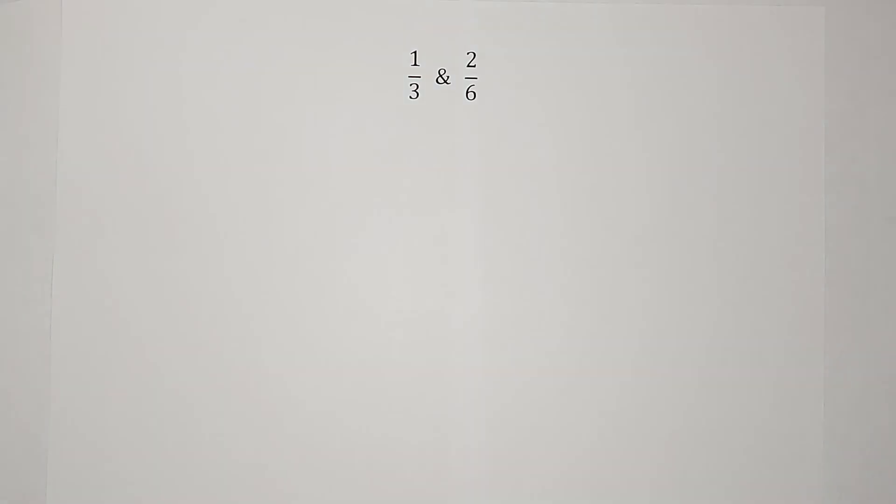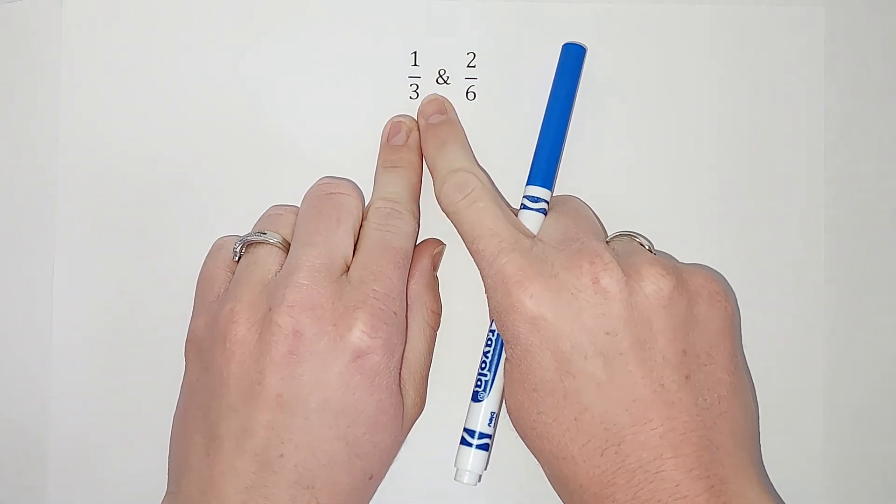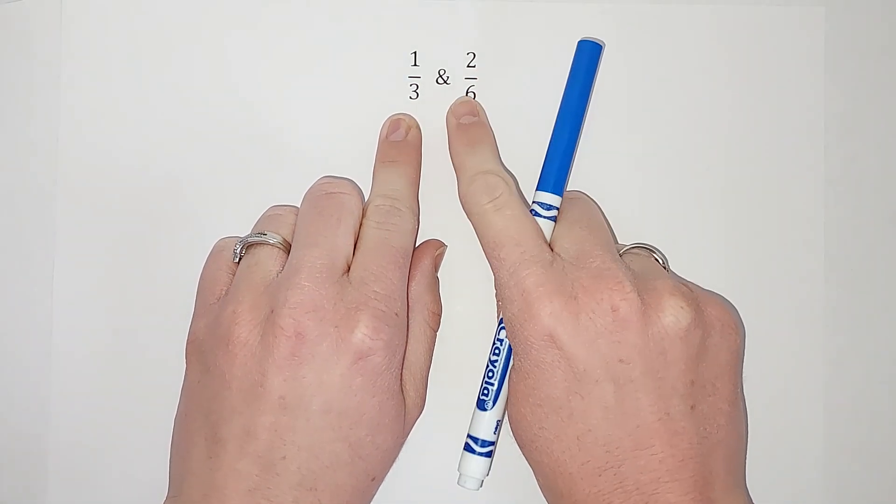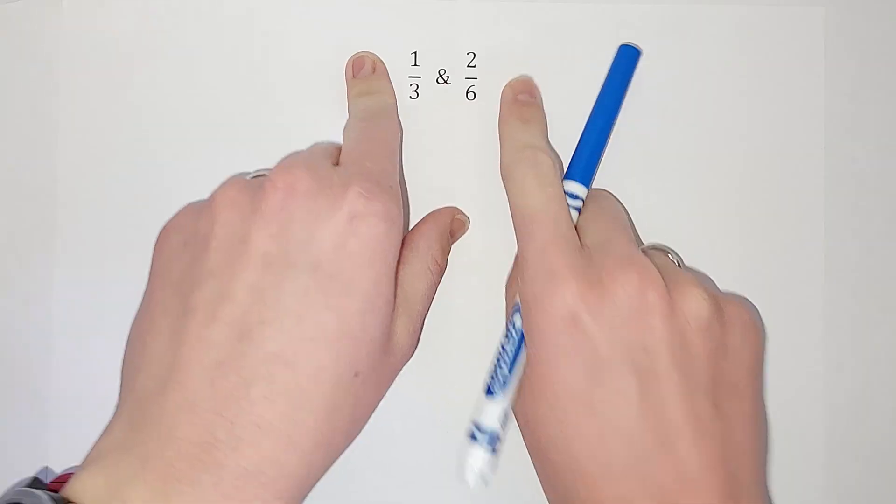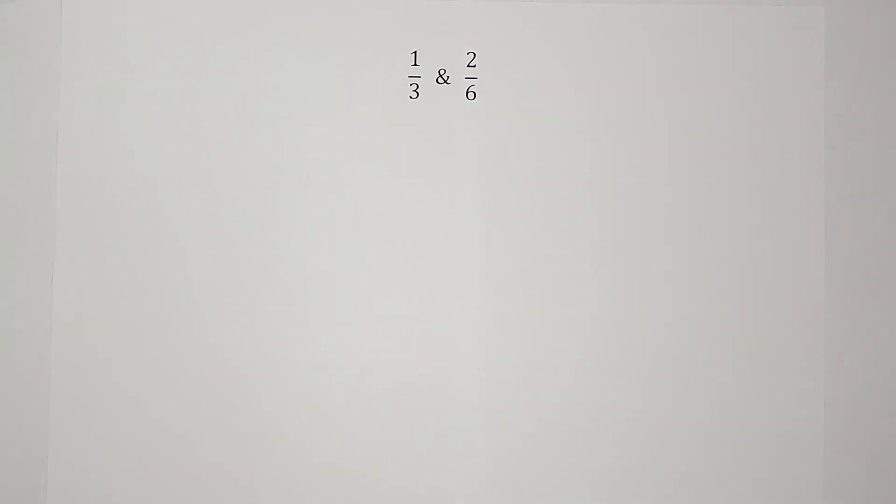We're going to take a look right now and see why that works. So if I were to cross products on this, I get three times two gives me six, six times one gives me six. They'd be the same, so I'd say yes, they are proportional. But let's see why.